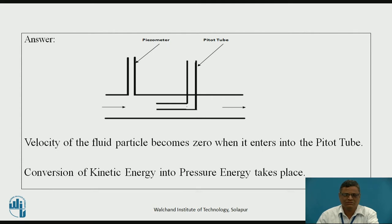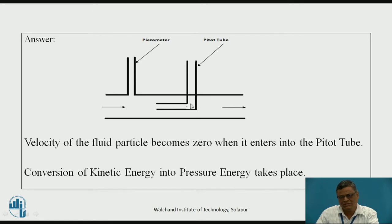When fluid particles enter the horizontal side of the Pitot tube, they carry some velocity. But once inside, there is no further horizontal path, so as they rise in the vertical side, the fluid particles no longer have any velocity. The vertical side provides an obstruction to the fluid flow, reducing the velocity of the fluid particles to zero.